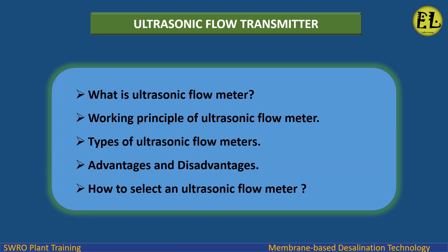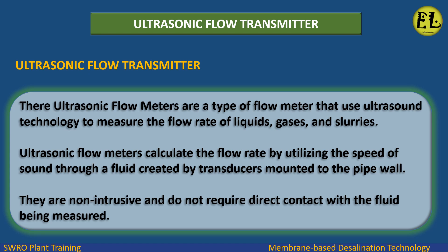What is an ultrasonic flow meter? Ultrasonic flow meters are a type of flow meter that use ultrasound technology to measure the flow rate of liquids, gases, and slurries. They calculate the flow rate by utilizing the speed of sound through a fluid, created by transducers mounted to the pipe wall. They are non-intrusive and do not require direct contact with the fluid being measured.